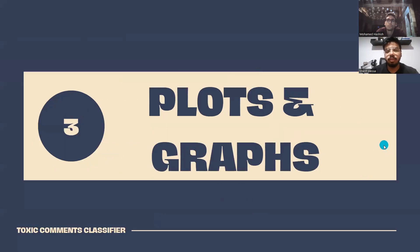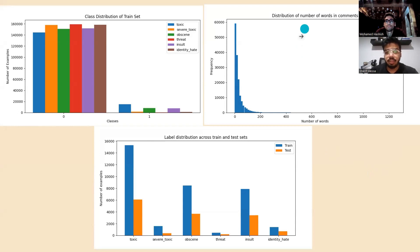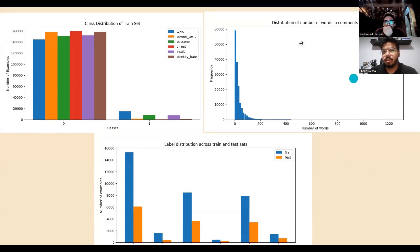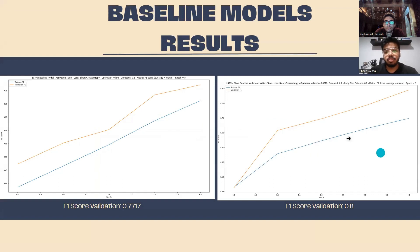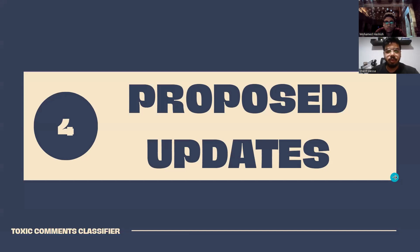For the plots and graphs obtained after running the baseline model without modification, we have a class distribution of the training set, a distribution of the six labels in the training and test sets, as well as a distribution of the number of words per comment. These are the F1 scores we got after running the initial model. Next, Hashish will discuss the proposed updates.